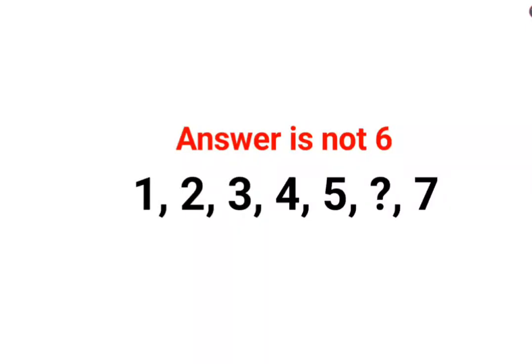Welcome everyone. So yes, literally everyone thought that the answer for this one was supposed to be six because we have one followed by two followed by three followed by four followed by five followed by question mark and then we have seven. So this is a proper one two three four five six seven series, looks like right?